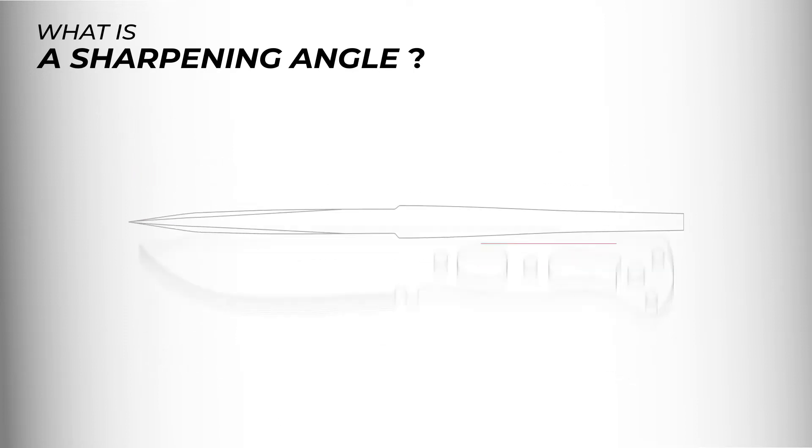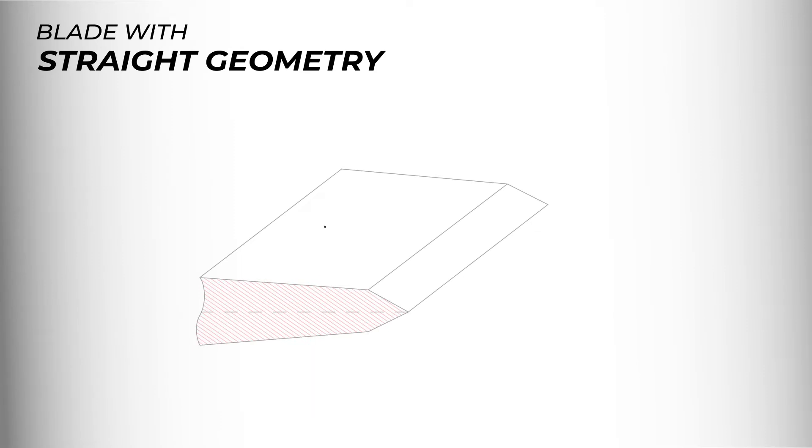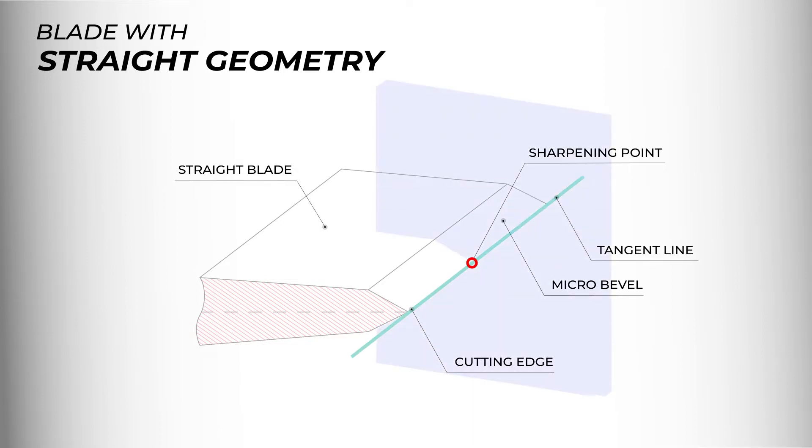Well, let's consider the simple case of a blade with flat geometry. At a given point, we will draw a tangent to the blade, construct an orthogonal plane to that point and to that straight line. Thus, at the intersection of the point of the blade, the tangent and the orthogonal plane, the sharpening angle has been found.